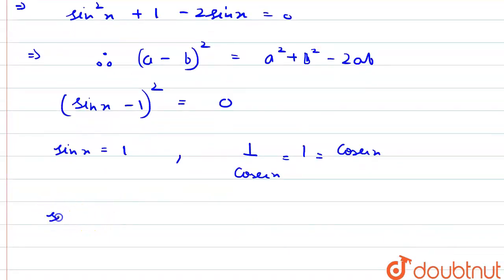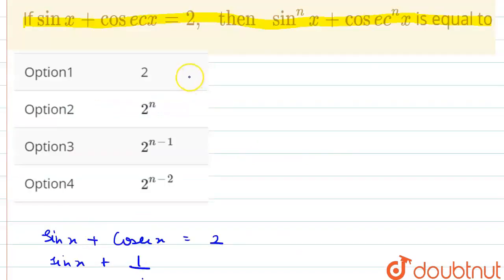So, what we have to find? We have to find sin raised to power n x plus cosec raised to power n x. Since sin x is 1 and cosec x is 1, we get 1 raised to power n plus 1 raised to power n. 1 raised to power n is 1, so we get 1 plus 1, which is equal to 2, which is our answer. So, option 1, 2 is our correct answer. Thank you.